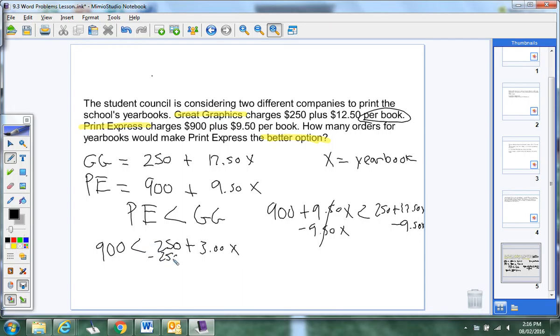You can just write 3 if you want. I'll just put $3 so you can see it as money still. And then we're going to minus 250, minus 250. That gives you 650 is less than $3X. And then we're going to divide by 3.